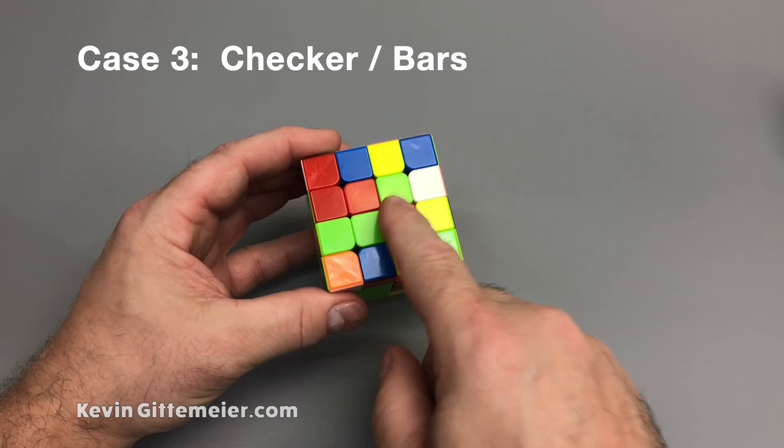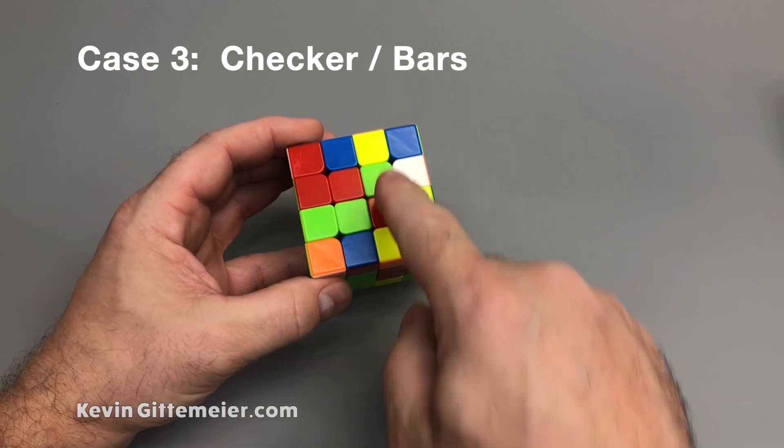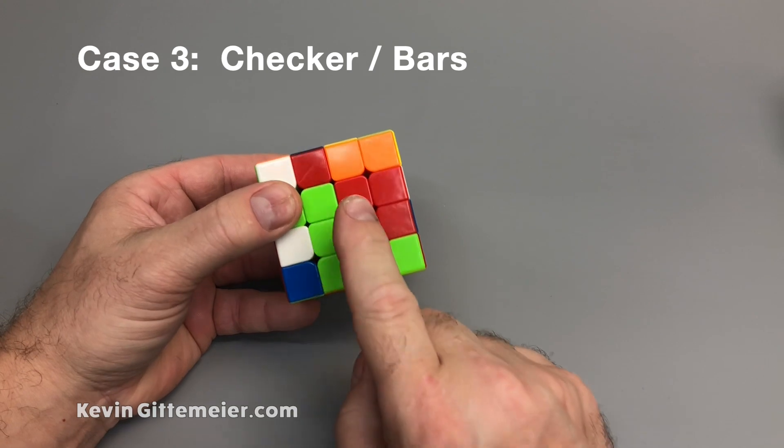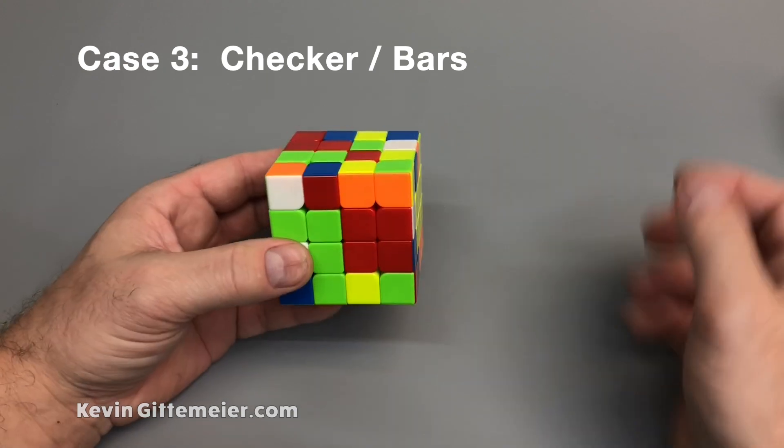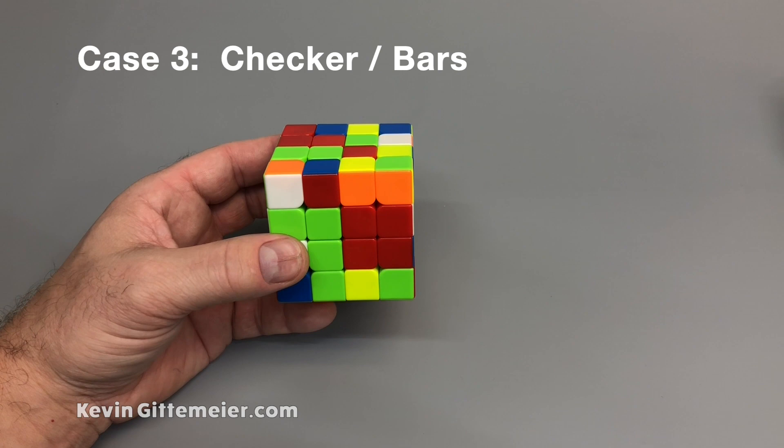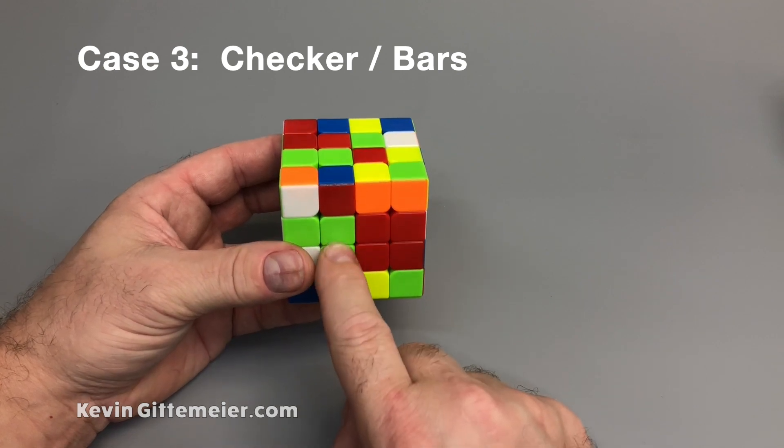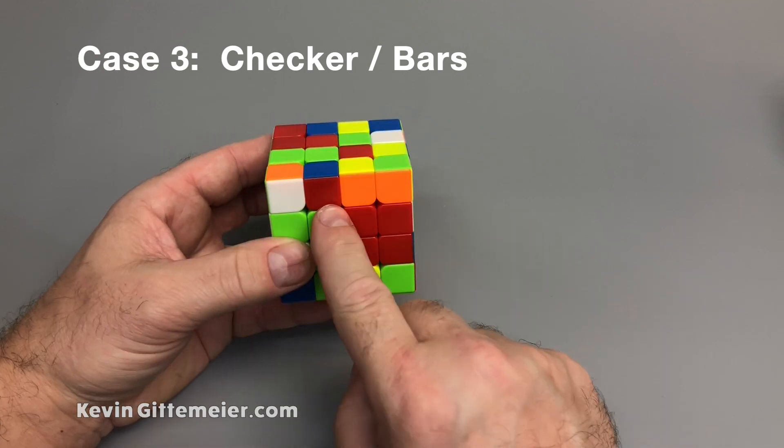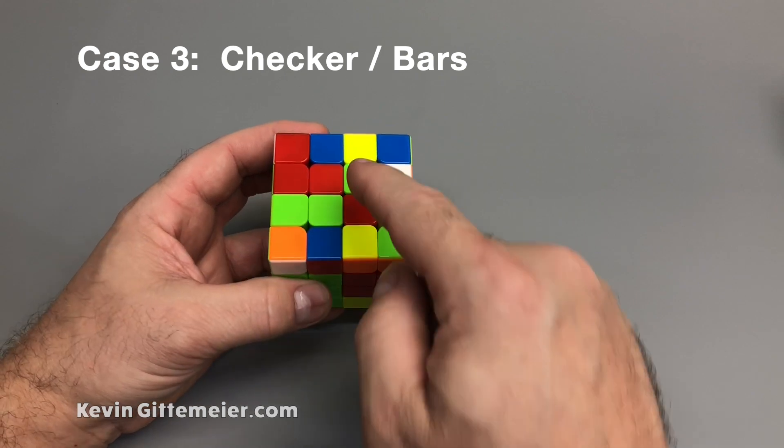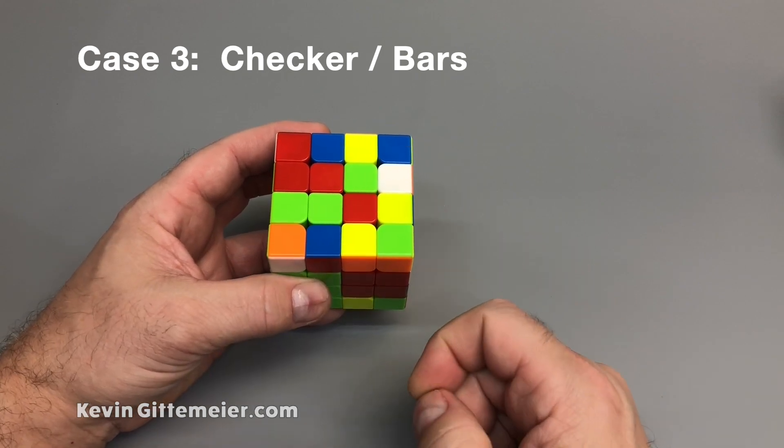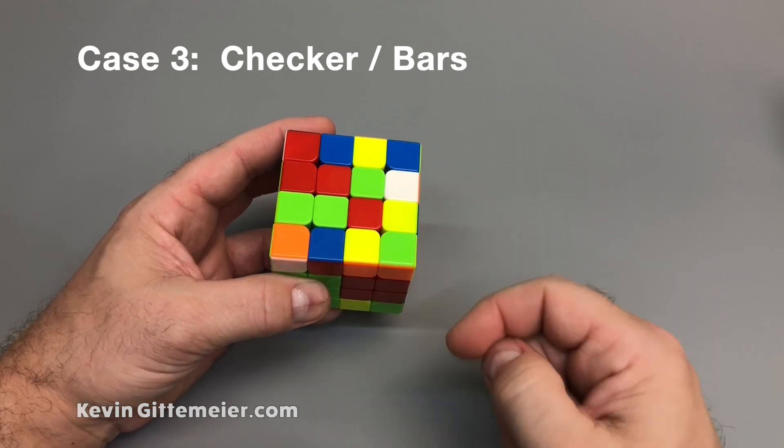Case three, checker pattern and bars, or what some people consider diagonals and bars. Just focus on one color, whether it's the green or the red. So for the purpose of this example, I'm going to focus on green. So I have one solved green bar. I just need to connect these two to create a bar, which by default will create a red bar.